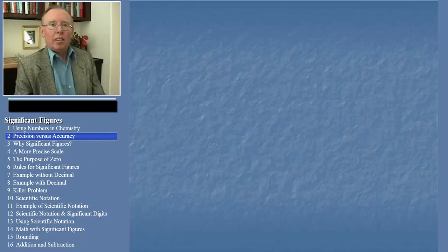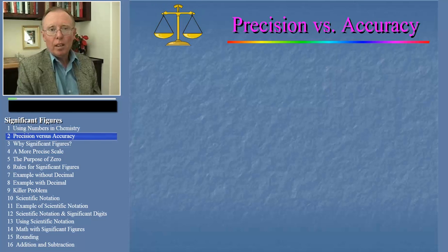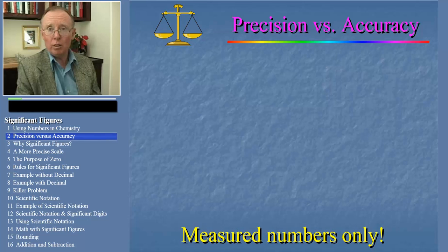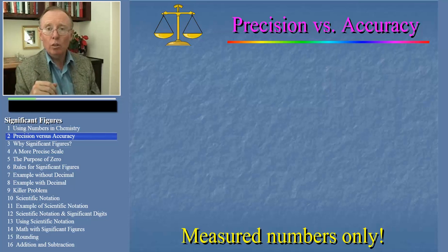To begin, let's clarify the difference between precision and accuracy. Keep in mind throughout this discussion that we're talking only about numbers that are measured, like weight or length. The precision of a measurement and the accuracy of a measurement mean two completely different things. It's the mark of a true chemist to know the difference.